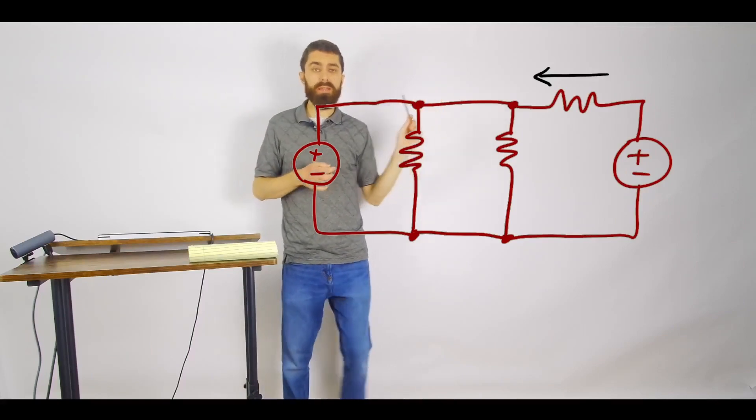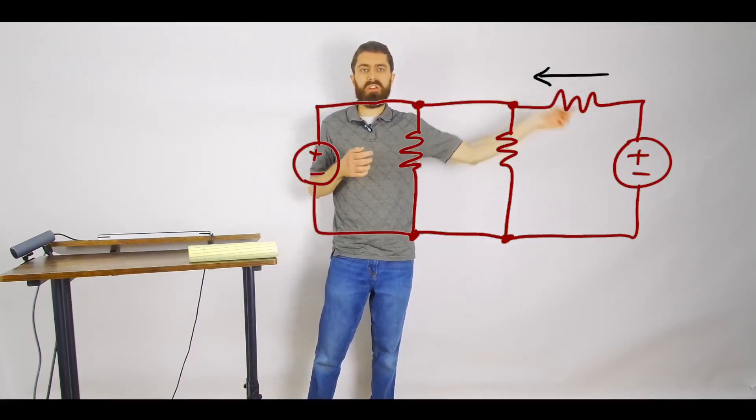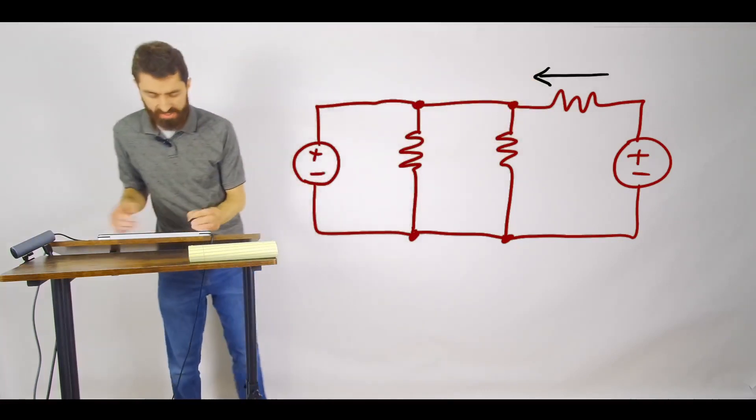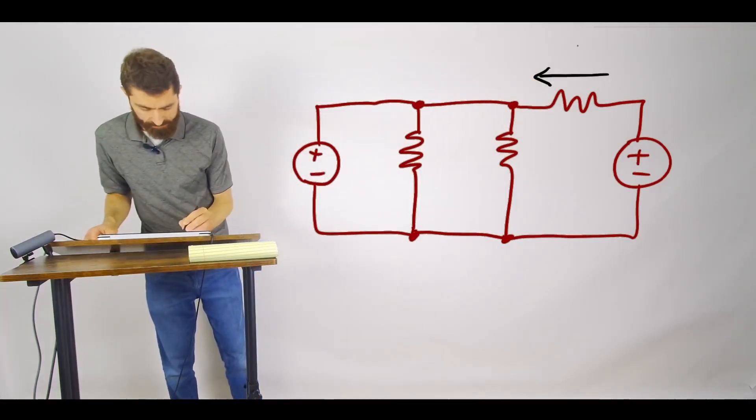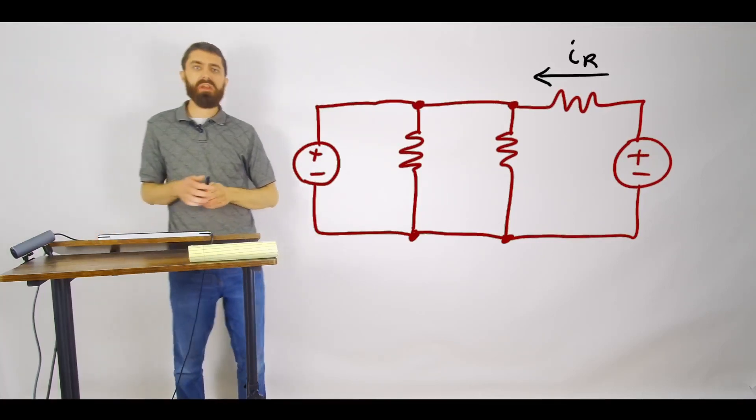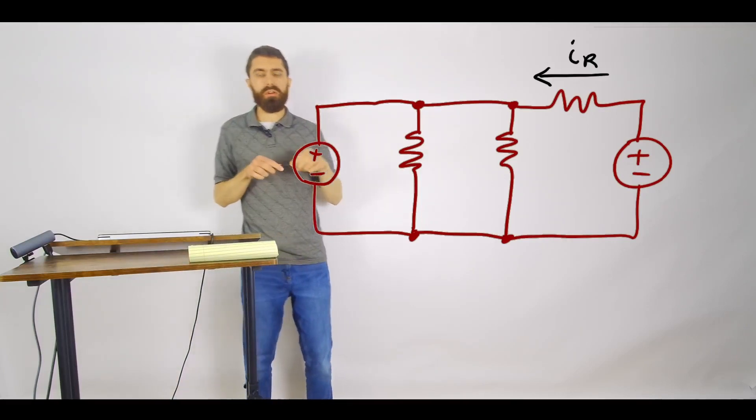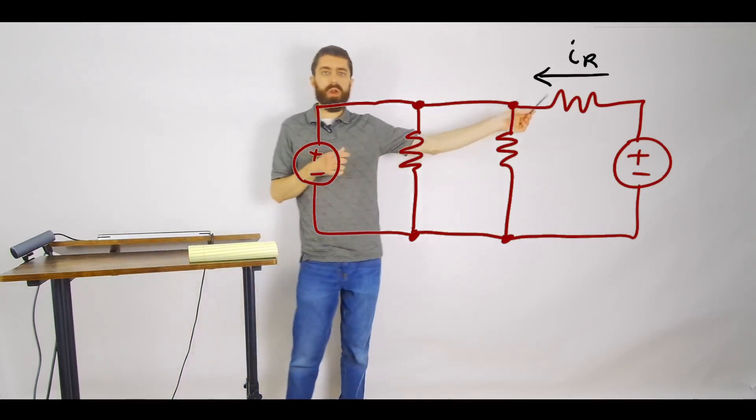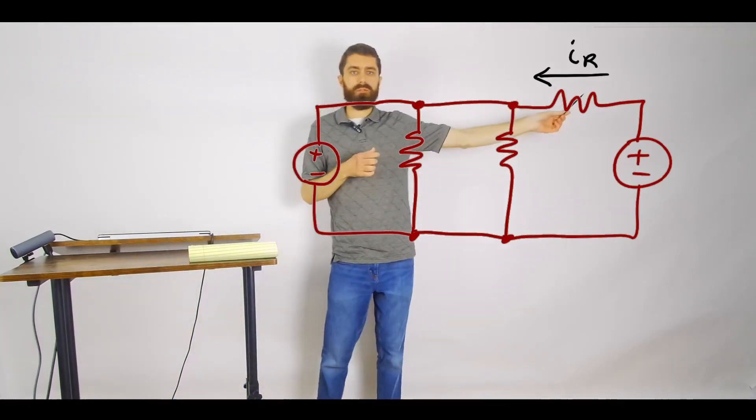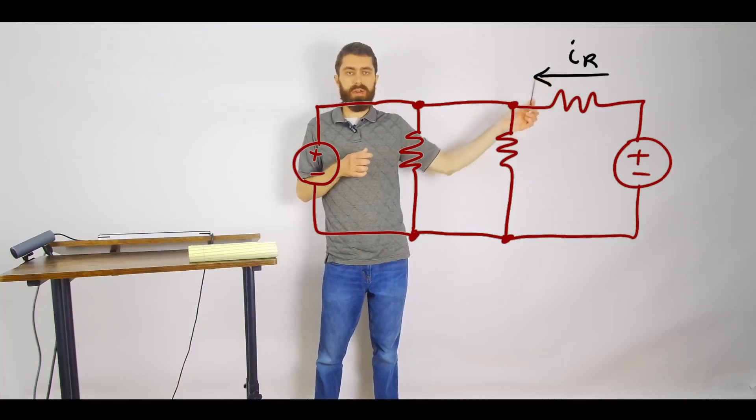It's okay to go ahead and just give it an arrow, give it a direction and call it a certain variable like call it IR. And so then when you apply all your equations and all your analysis, you solve the problem as if the current is going that direction.